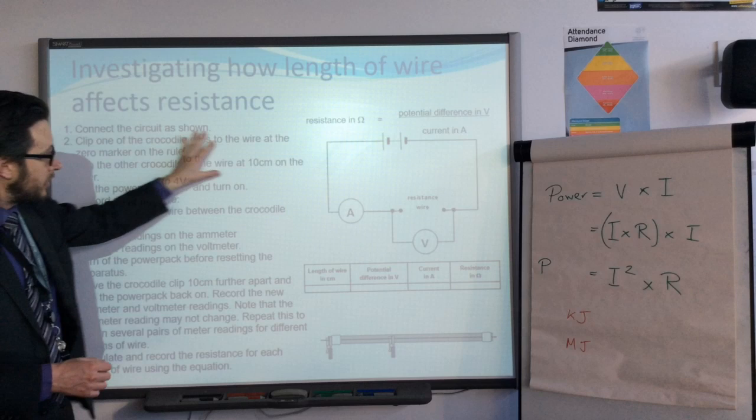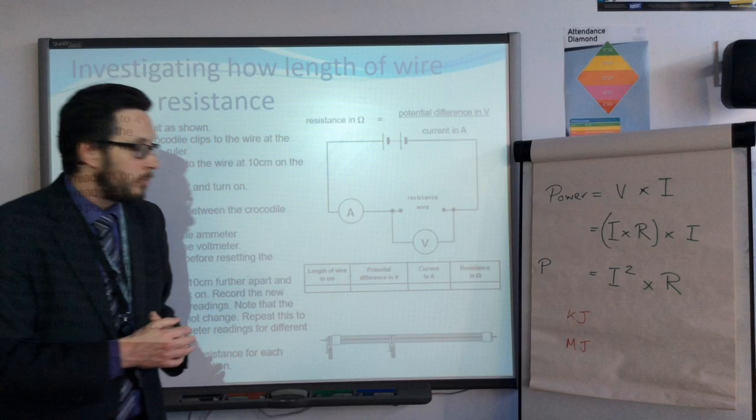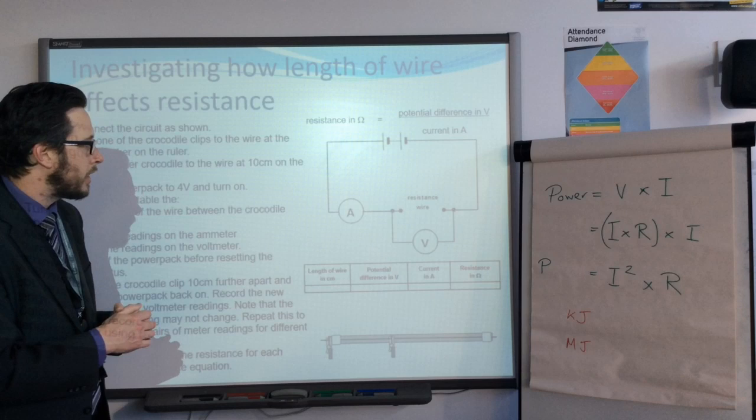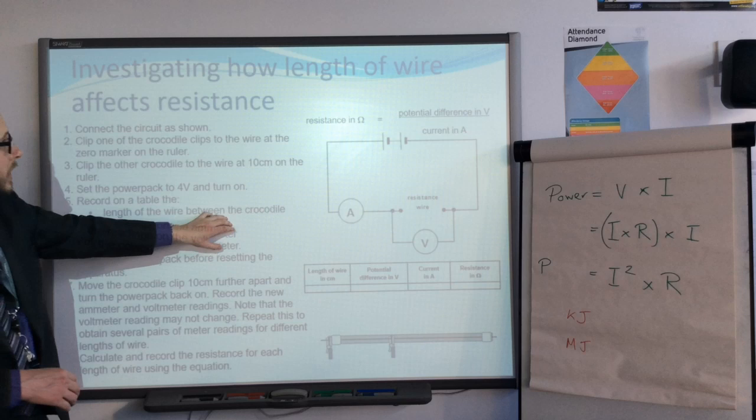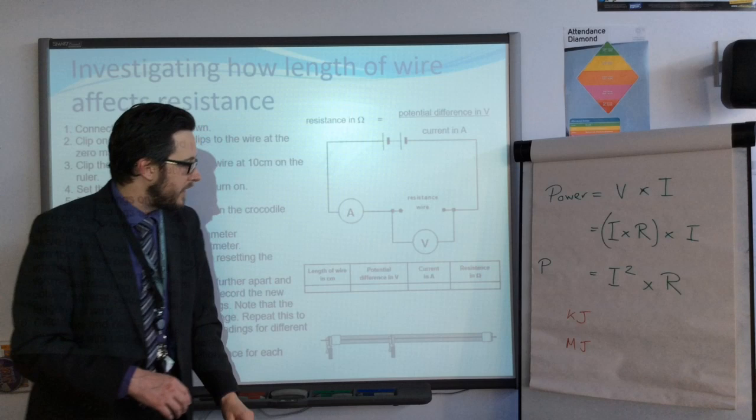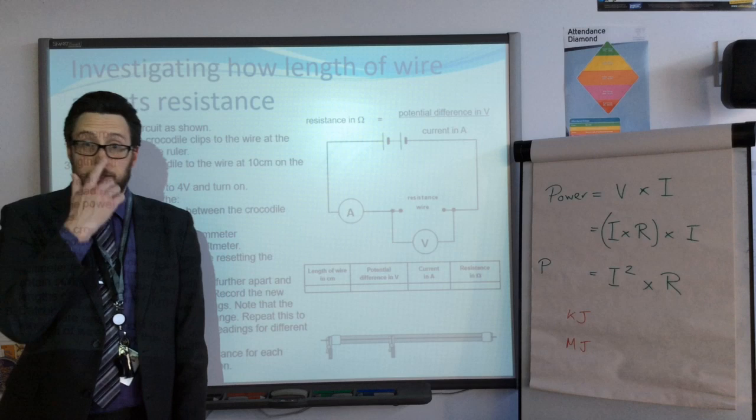Again lots on this slide so I'm not expecting to read this all off the board. But it is a required practical linked to circuits and it didn't come up last year so there's a chance it will. I strangely enough had a feeling this would be an important practical but that is based on nothing more than gut feeling, so don't read too much into it. But I'm going to go through briefly what it is now. This is to check how the length of the wire affects the resistance. You set up a circuit like the circuit diagram shown here. Where it says resistance wire you have what looks like this - essentially a meter ruler with a thin wire attached to it. You crocodile clip two different lengths on that wire.